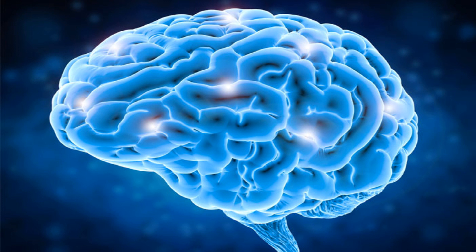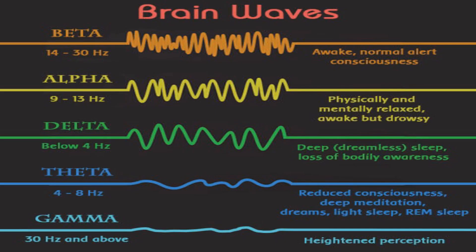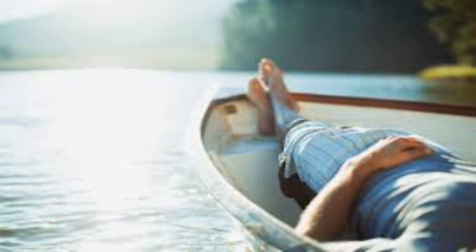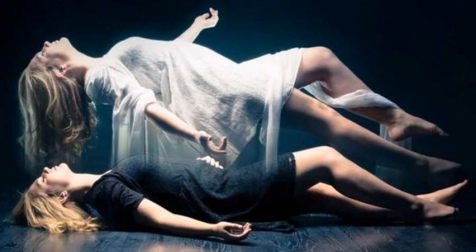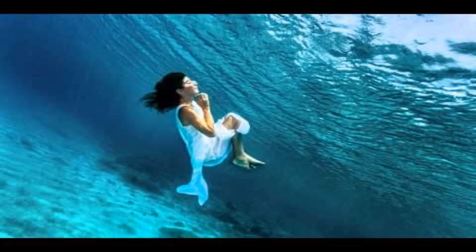Our brain produces five types of waves: beta, alpha, delta, theta, and gamma. Every second, all these waves are produced in our body, but for each activity, one dominant wave will be active. Delta waves are produced when you're asleep. The theta state is when the mind is in and out of sleep — this is the most creative state of mind.